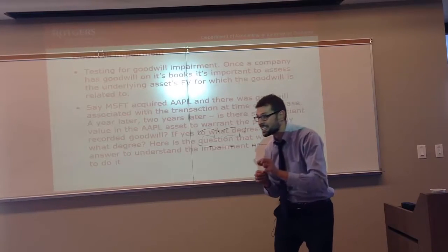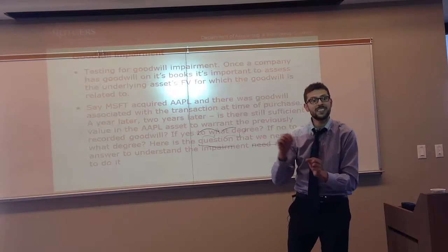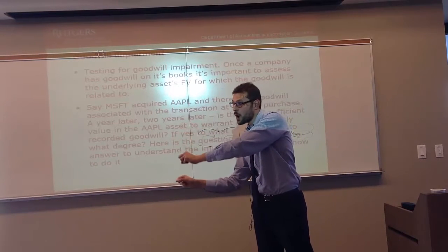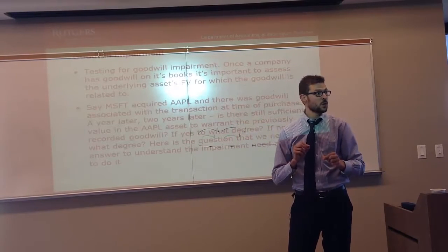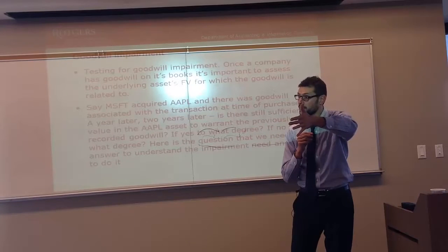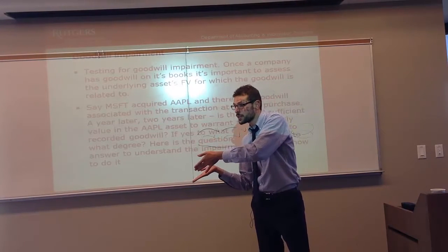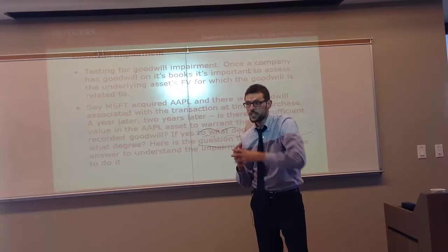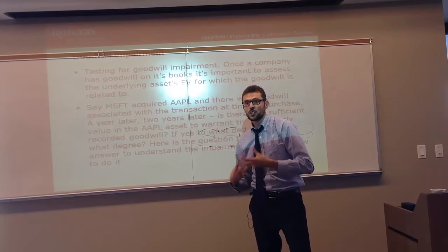Goodwill is a very interesting asset on your balance sheet. It is dependent on the degree to which the fair value of your previously acquired asset still exceeds its book value. So if the excess at the time of acquisition was $58 billion but the current excess is only $20 billion, then you have to impair by $38 billion.